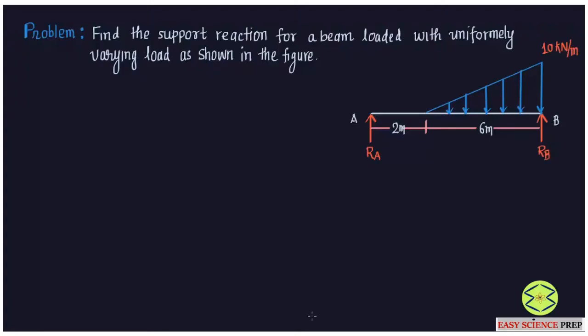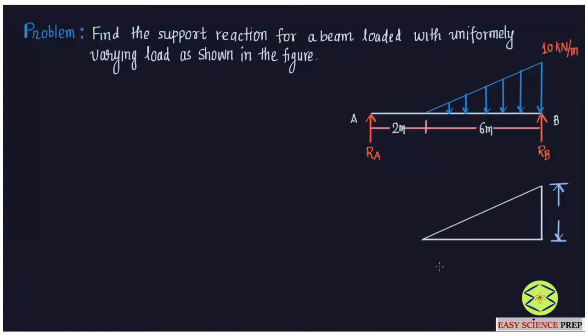To find the support reactions for this beam, we first need to convert the uniformly varying load into an imaginary point load. Let me explain how to do that. If we have a triangular load variation, the height of the triangle represents the maximum intensity, and this type of loading is also called triangular loading. The length on which the load is acting is L.